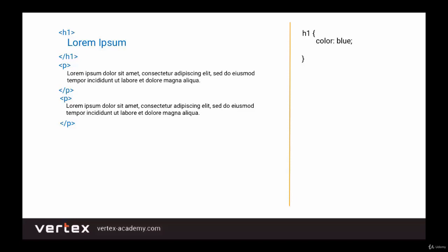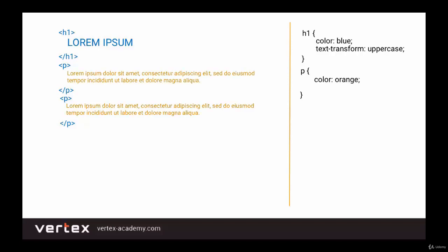To do this, we just add a property called TextTransform. As you may recall, we actually covered this property in a previous video. So we set the value for it as uppercase, and now you see that all of the letters are indeed in uppercase. And if you want all of the paragraphs to be orange, then in CSS for the p selector, we're going to give it a color property and set it as orange. And as a result, now our paragraphs have orange text.